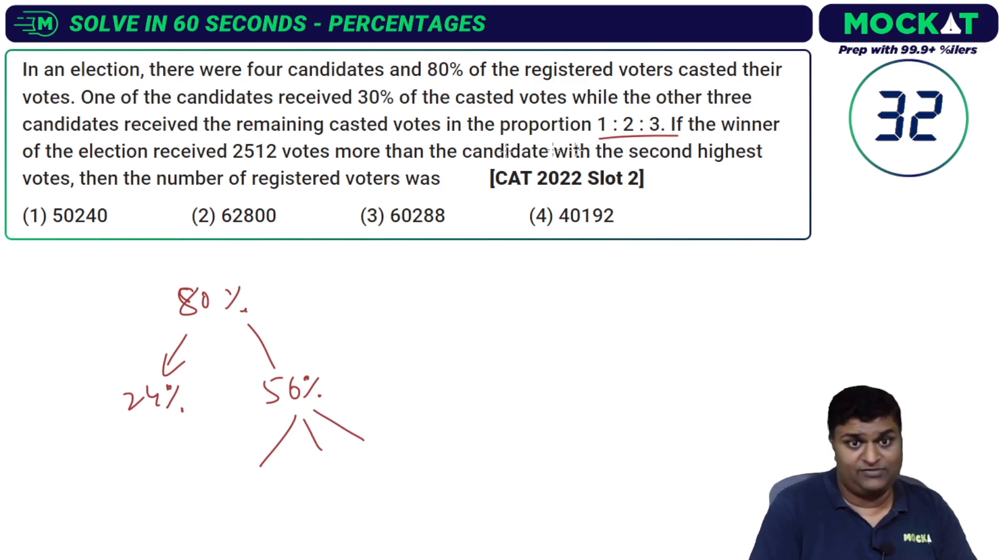If the winner of the election received 2512 votes more than the candidate who got the second highest, I'm concerned about the winner and the second highest. Three parts is the highest in this, and next is going to be 18 something percent.